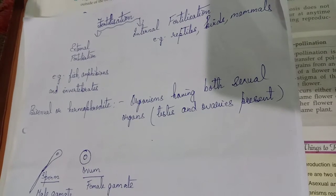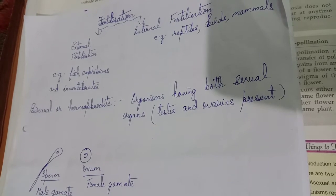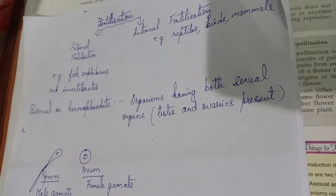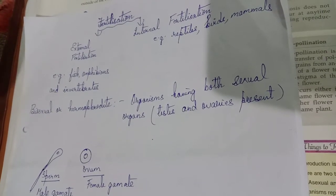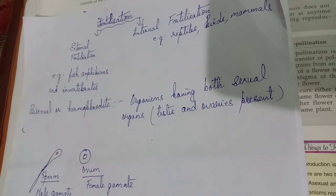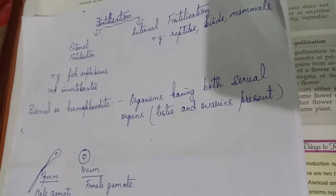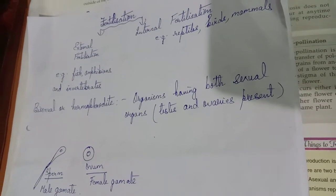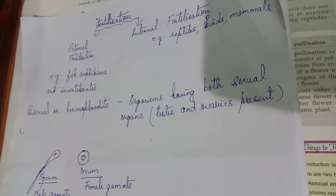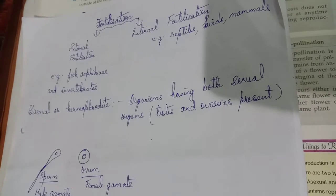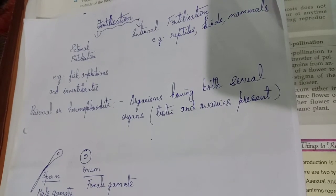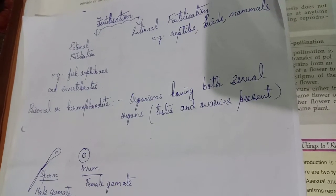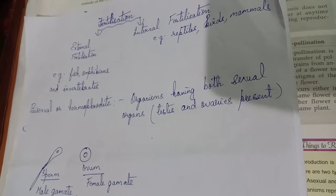Now we shall discuss in detail how sexual reproduction takes place in humans. In humans, sexual organs are present in the male and female individually, and we can easily distinguish a distinct male individual and a female individual.